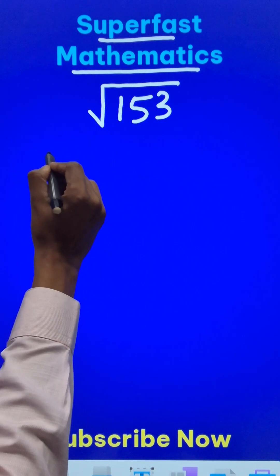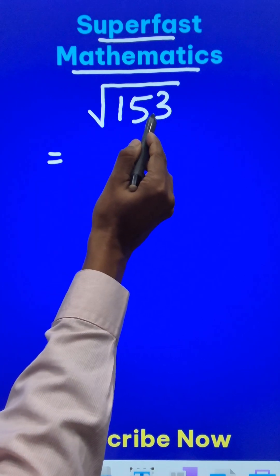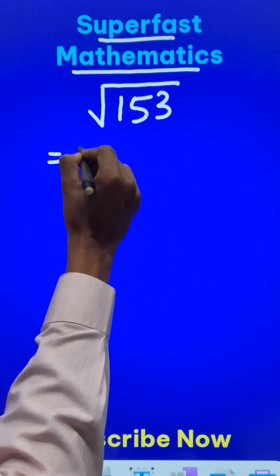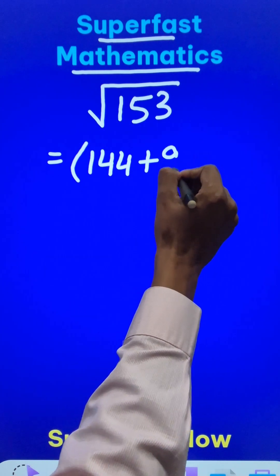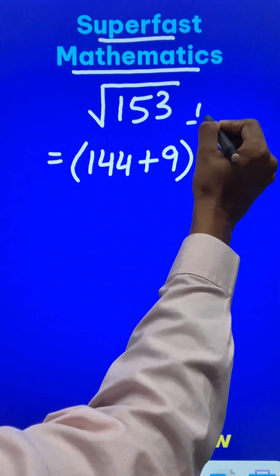The first thing is I need to find a number below 153 which is a perfect square. That number is 144, which is 12 squared, and 144 plus 9 will give me 153. Power half is square root.